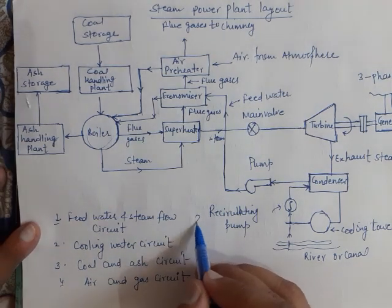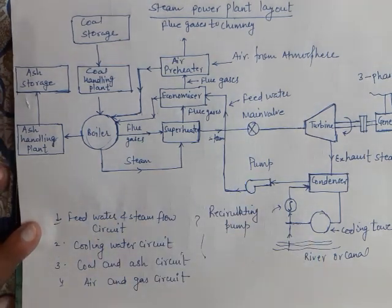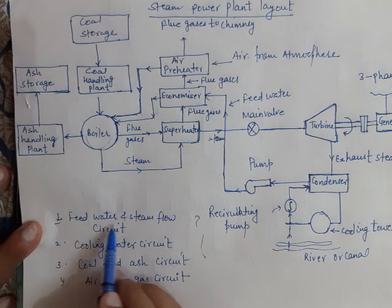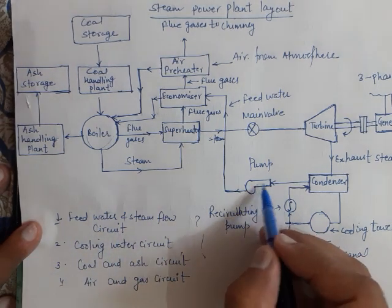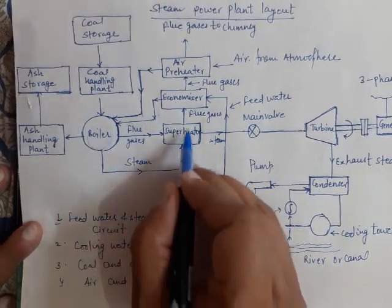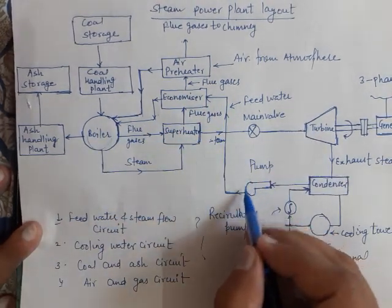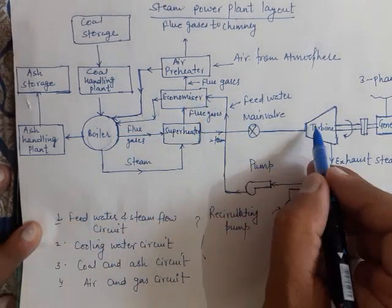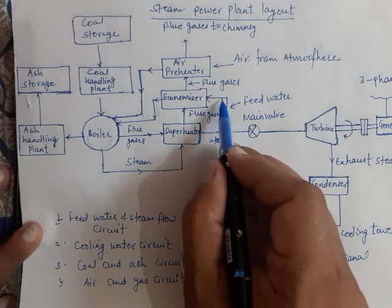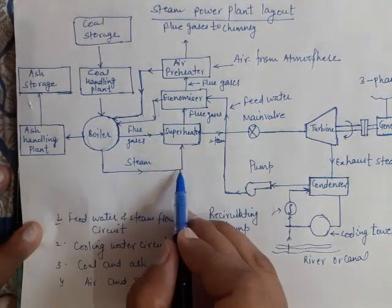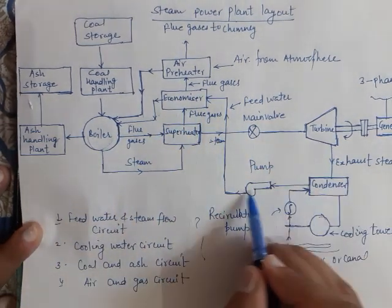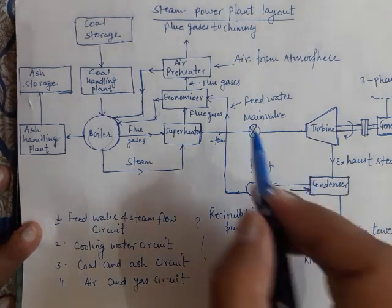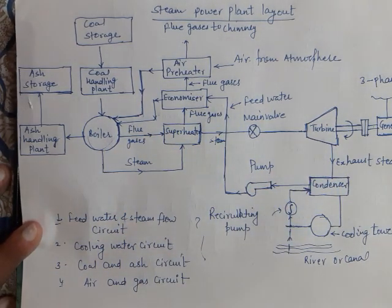The whole layout can be explained with the help of four different circuits. The first is the feed water and steam flow circuit, which covers the path from the feed water pump through the boiler, superheater, turbine, and condenser.